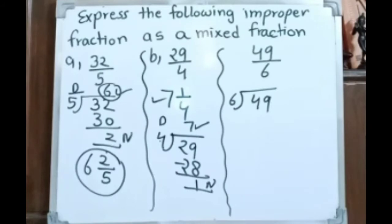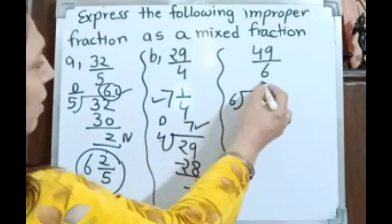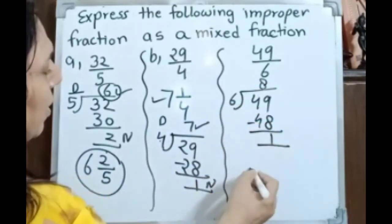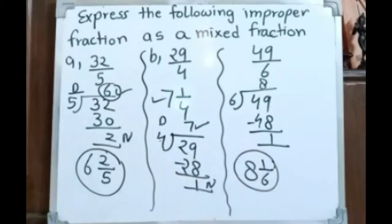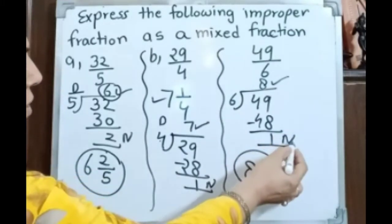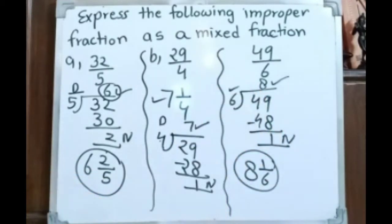For 49 divided by 6: 6 eights are 48, remainder 1, so the answer is 8 whole number 1 by 6. When converting an improper fraction, divide it — the quotient becomes the whole number, the remainder is the numerator, and the divisor is the denominator.